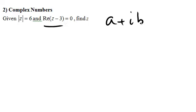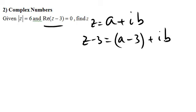z minus 3 is... And you collect the real bits together, always trying to separate the real and imaginary parts. Then this bit is equal to 0. And therefore, a is equal to 3 straight away.